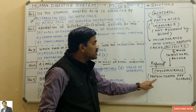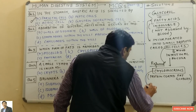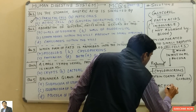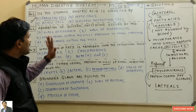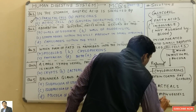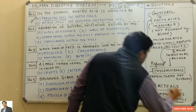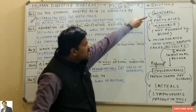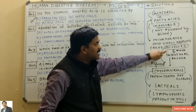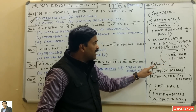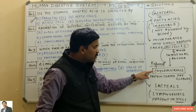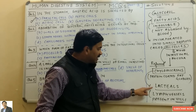Chylomicrons are protein-coated fat globules. These chylomicrons are absorbed by the lacteals. Lacteals are lymph vessels which are present in the villi of the small intestine. So micelles move into intestinal mucosa, are reformed into chylomicrons, and chylomicrons are absorbed by the lacteals.